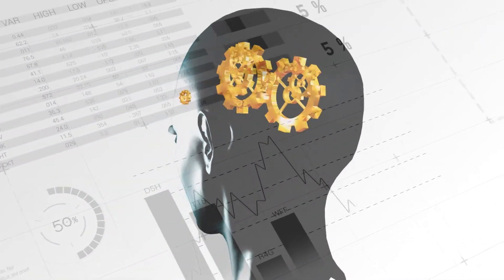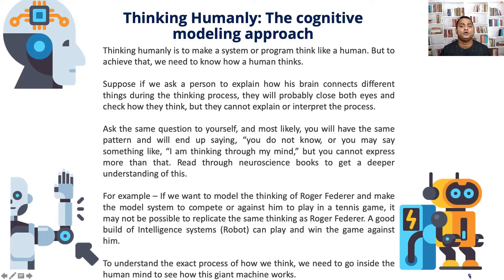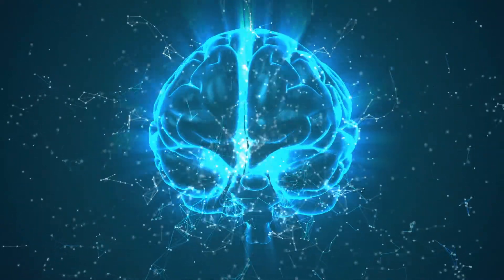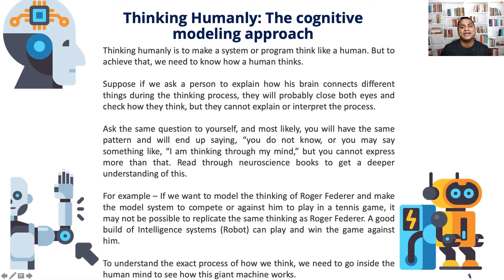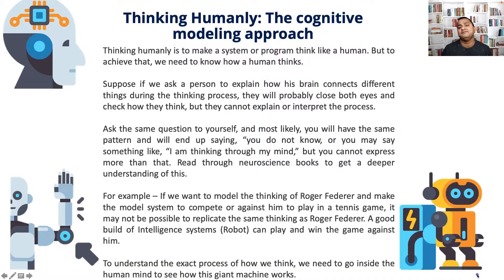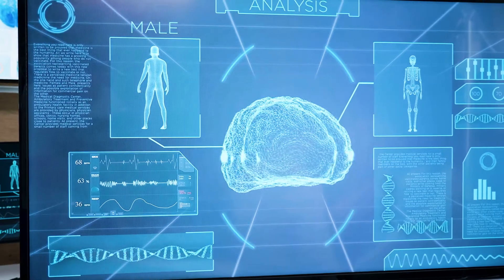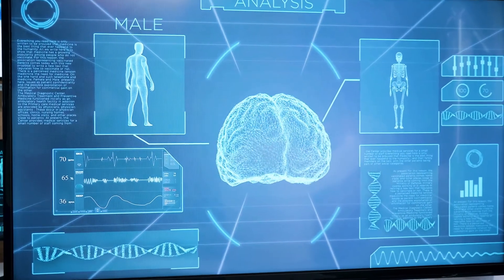Thinking humanly: the cognitive modeling approach. Thinking humanly is to make a system or a program think like a human, but to achieve that we need to know how a human thinks. Suppose if we ask a person to explain how the brain connects different things during the thinking process, they will probably close both eyes and check how they think, but they cannot explain or interpret the process. Ask the same question to yourself and most likely you will have the same pattern — you do not know, or you may say something like 'I'm thinking through my mind,' but you cannot express more than that. Read through neuroscience books to get a deeper understanding of this.